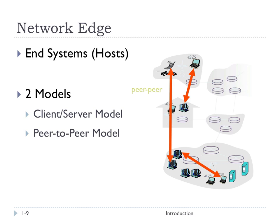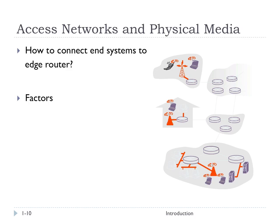As we move in from the edge, the next level is the access network. We're asking the question: how do you connect these end systems to the first router at an Internet service provider? The answer is through access networks. These may be residential access networks — the kinds of Internet you get at your house: DSL, cable, maybe fiber if you're lucky.